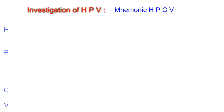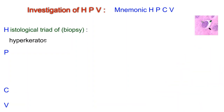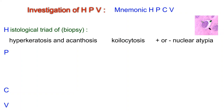Investigation of HPV — mnemonic HPCV. H: The histological triad of biopsy — hyperkeratosis and acanthosis, koilocytosis, plus or minus nuclear atypia. P: Pap smear shows koilocytes — a superficial or large intermediate cell, never parabasal.